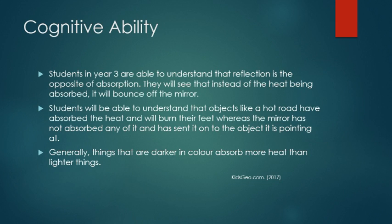Regarding the cognitive ability of the students: students in Year 3 are able to understand that reflection is the opposite of absorption. They will see that instead of the heat being absorbed, it will bounce off the mirror. Students will be able to understand that objects like a hot road have absorbed the heat and will burn their feet, whereas the mirror has not absorbed any of it and has sent it onto the object it is pointing at.